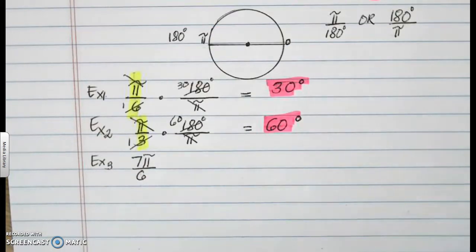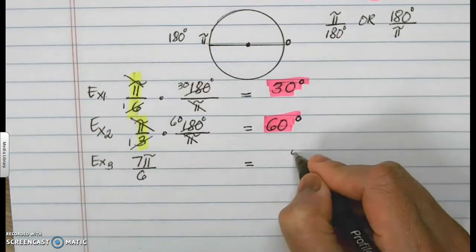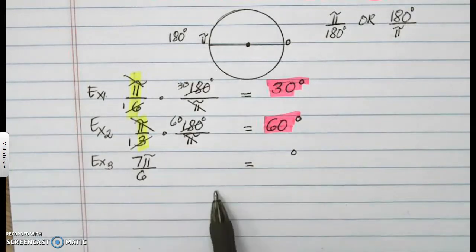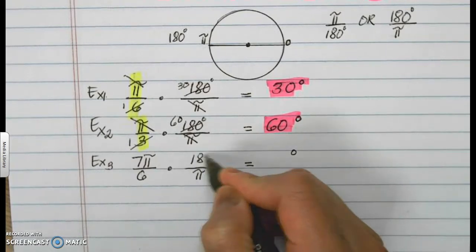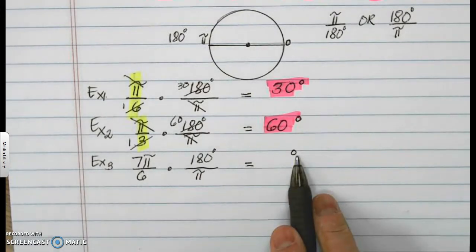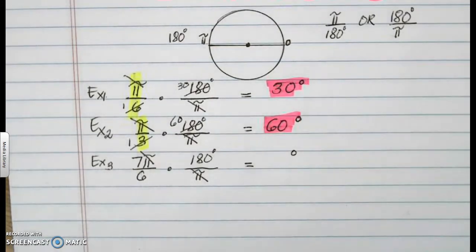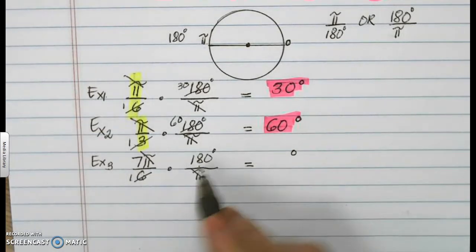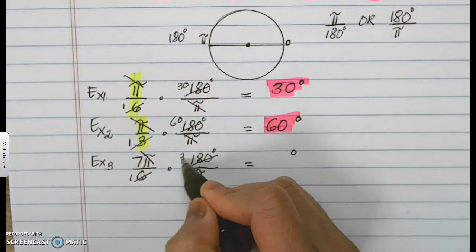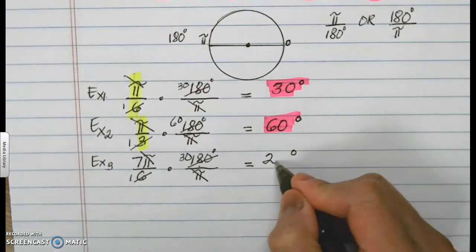Example number three. 7 pi over 6. I want to turn that to degrees. So I want my pi at the bottom so I can cancel it out. And I want my 180 degrees to be on top so that the degrees would be left. So let's begin. Pi and pi disappears and turns to a 1. 6 and 180 degrees are both divisible by 6. So if I divide this by 6, it's a 1. If I divide 180 by 6, it's 30. But I still have a 7 there. So 7 times 30 is 210 degrees.